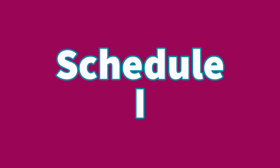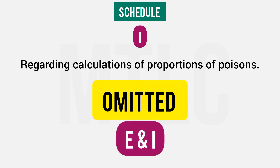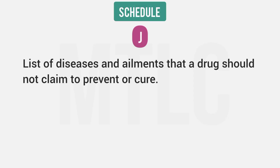Schedule I relates to calculations — how to calculate proportions of poisons. However, Schedule I is omitted, as is Schedule E. Schedule J is the list of diseases and ailments that a drug should not claim to prevent or cure.